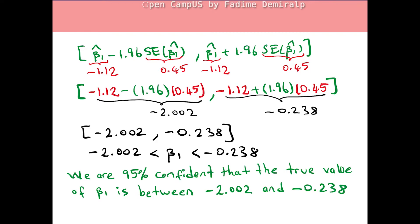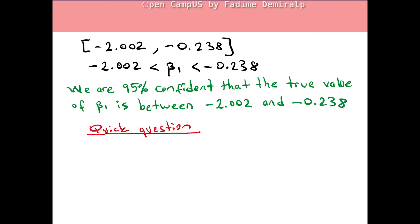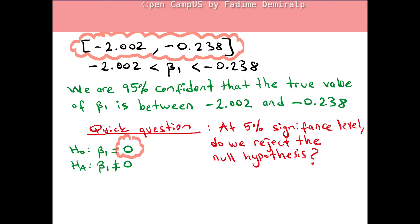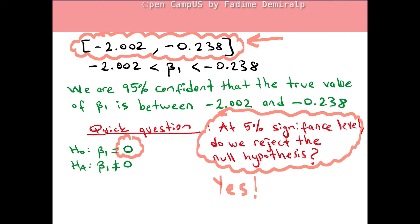I have a quick question for you. Let's have the null hypothesis that beta 1 equals 0, and the two-sided alternative that beta 1 is not equal to 0. At 5% significance level, do we reject the null hypothesis? The hypothesized true slope coefficient beta 1 is assumed to be 0 — is it contained in this 95% confidence interval? No, it's not contained in this 95% confidence interval. Therefore, the answer is yes: the null hypothesis that beta 1 equals 0 can be rejected at the 5% significance level.